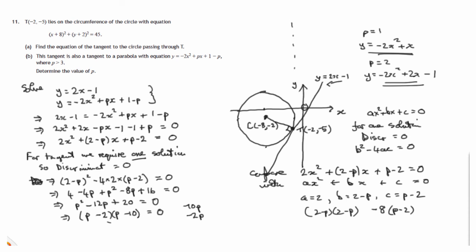So we've now got p - 2 might be 0, in which case p would be 2. Or p - 10 might be 0, in which case p would be 10. However, we are told in this question that p is greater than 3. So p = 10 is the only solution.